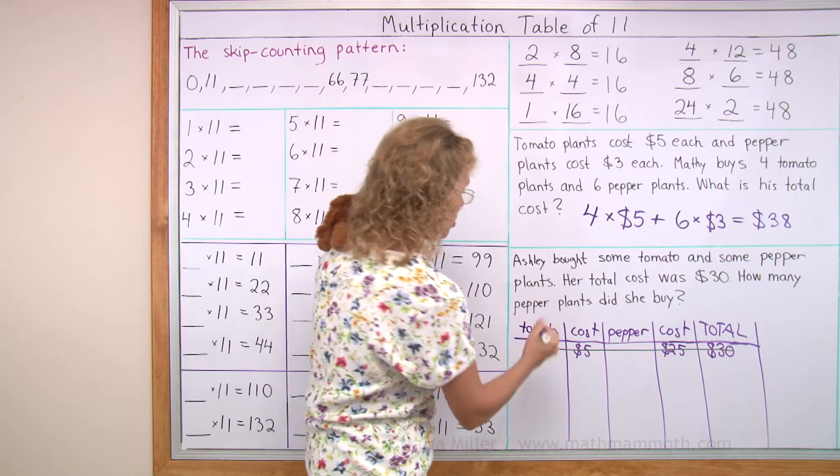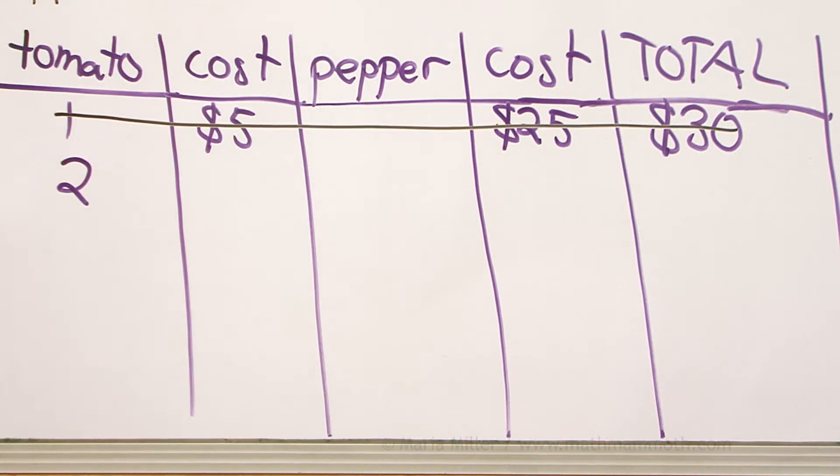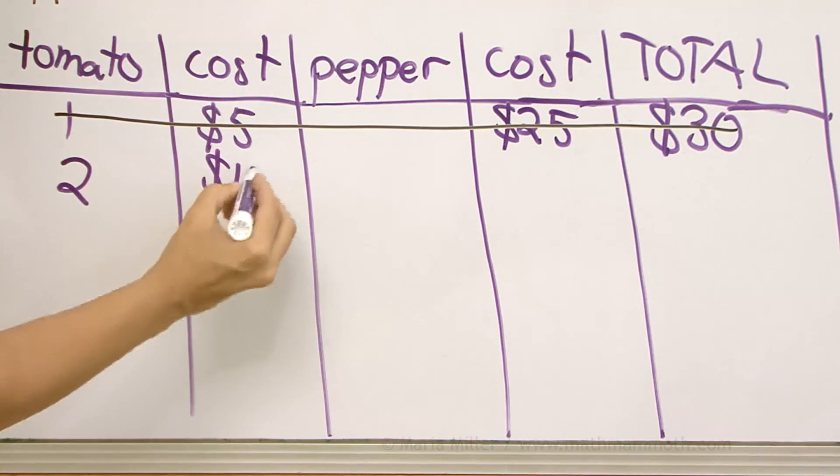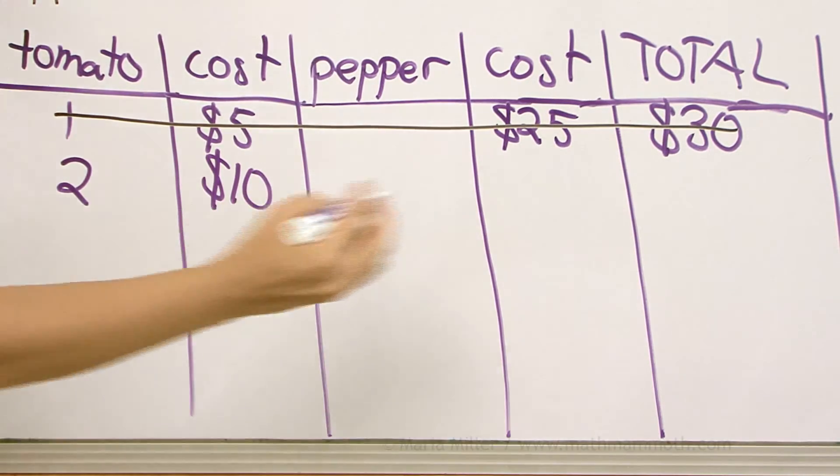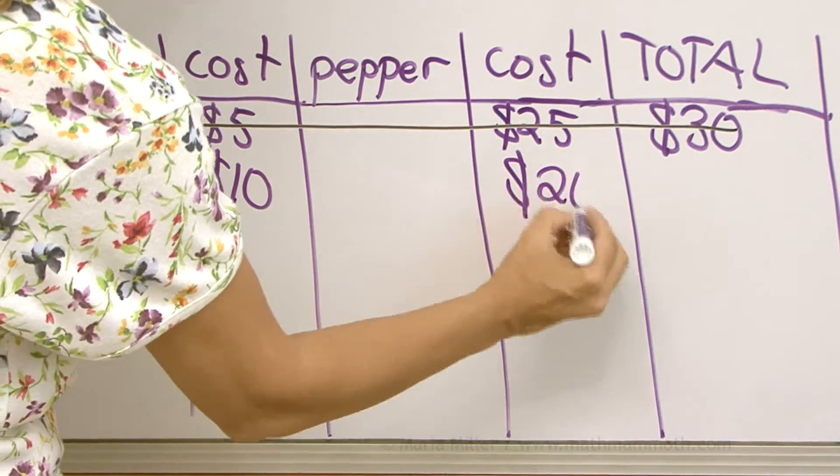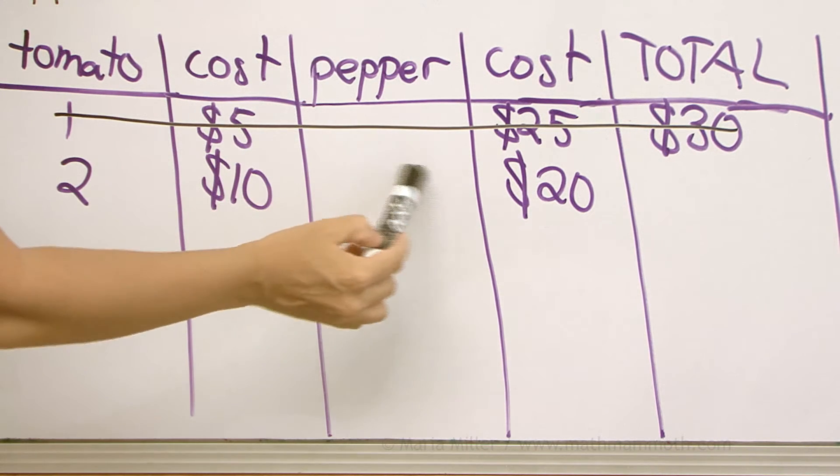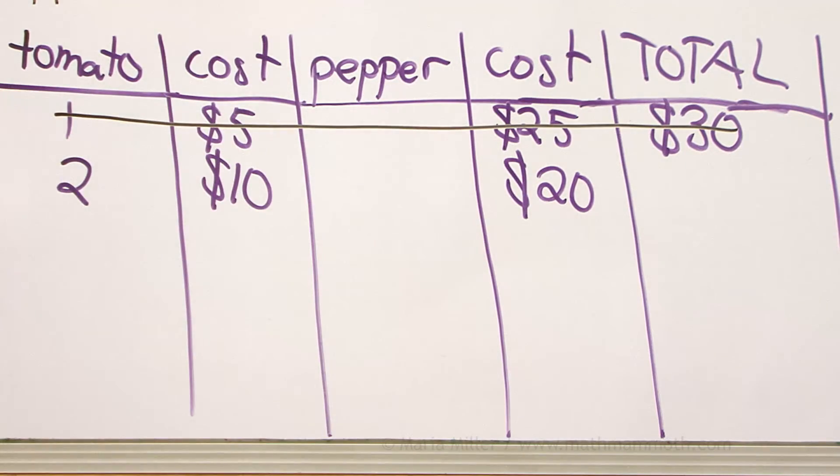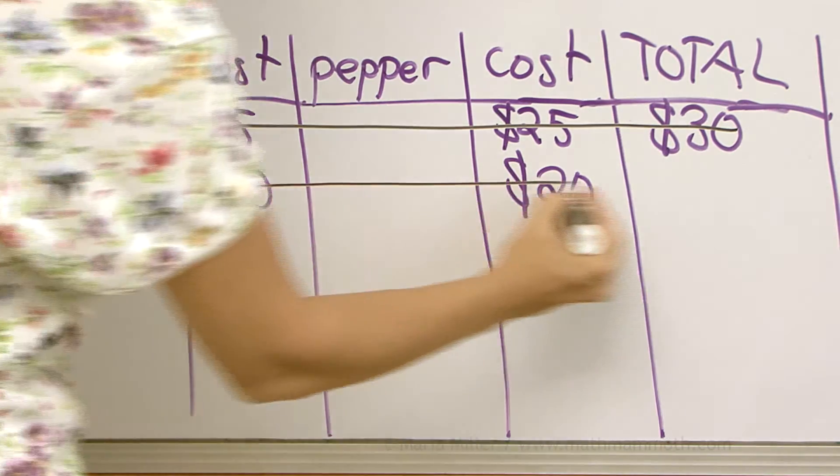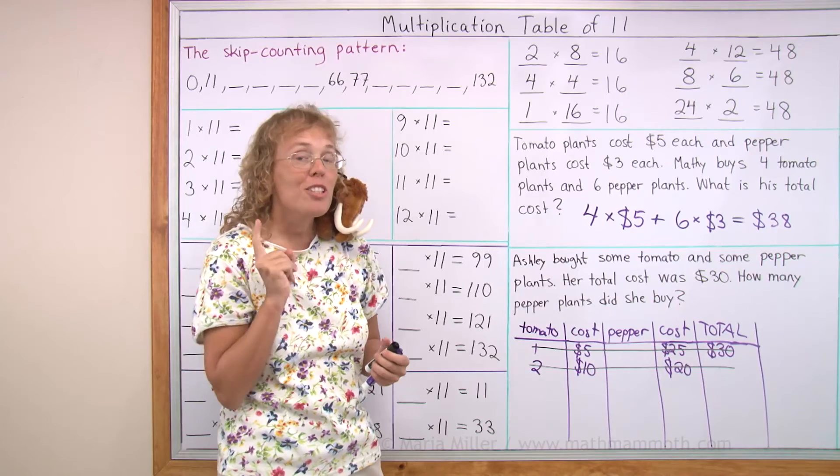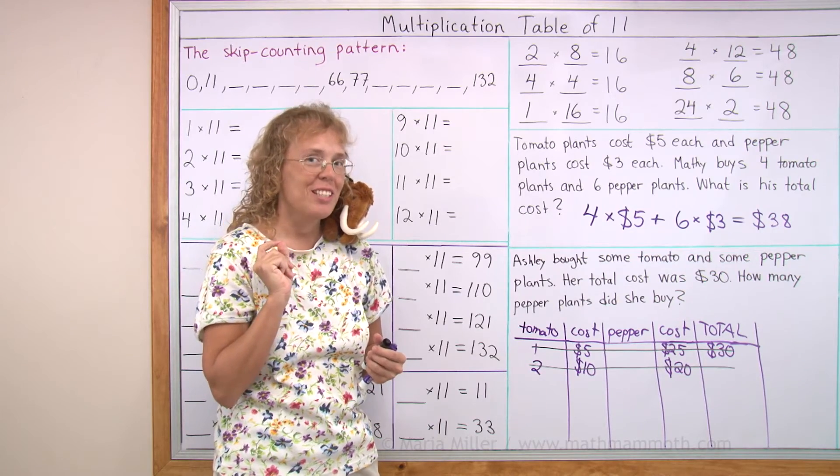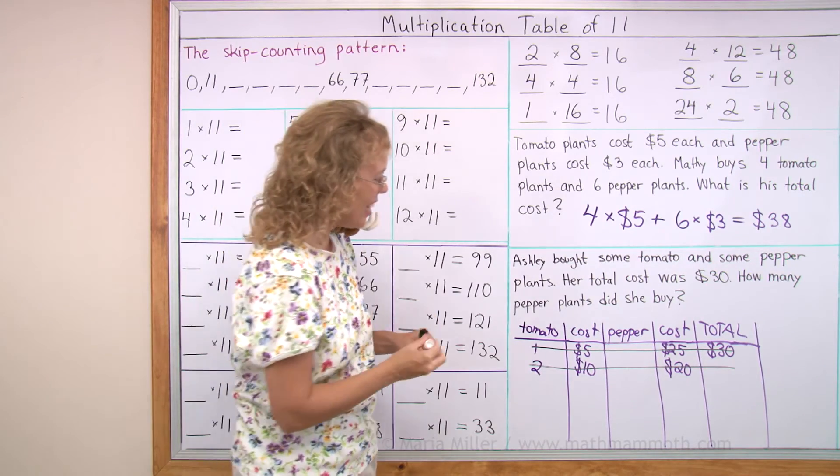And then I can try 2 tomato plants. Total cost would be 10, and so for the pepper plants we would need $20. But again, so many times $3 never equals 20. You can pause the video now and try to solve this yourself. Now you know the idea. I'll just go on.